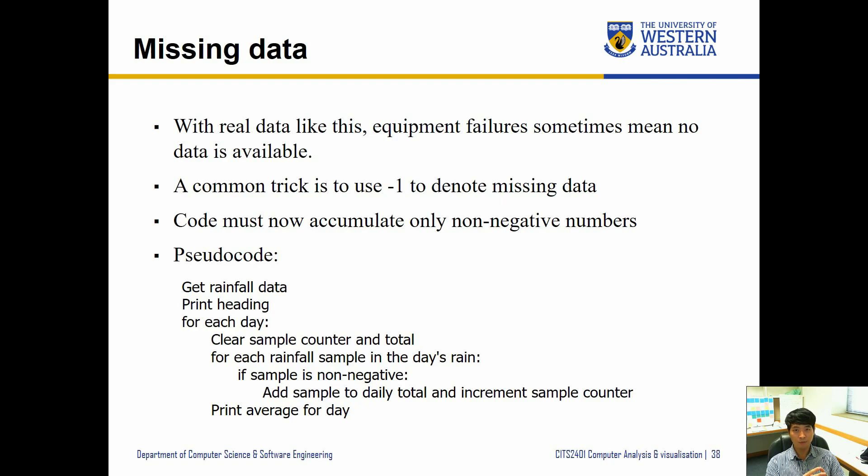Rather maybe some very unpractical value, for example negative 999, could be used to specify that this is missing data. So the code now must also accumulate only non-negative numbers.